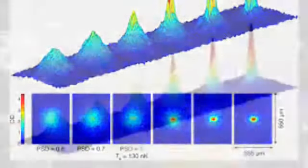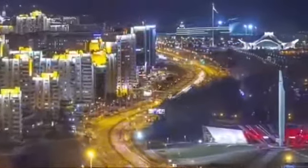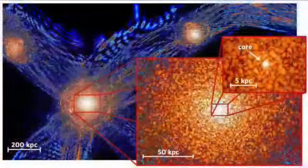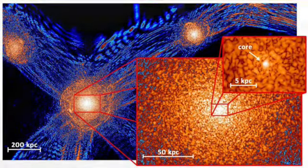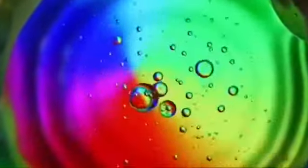Bose-Einstein condensates start with a cloud of diffuse gas. Many experiments start with atoms of rubidium, then cool them with lasers using the beams to take energy away from the atoms. Scientists then cool them further using evaporative cooling.